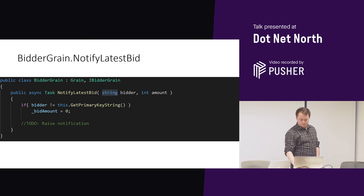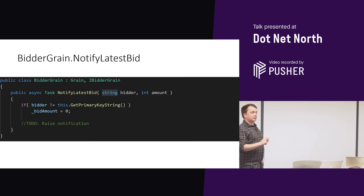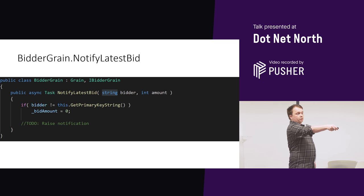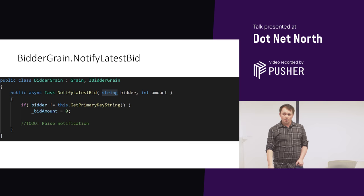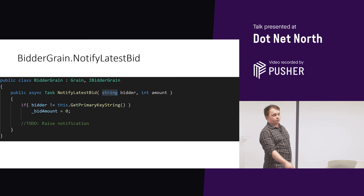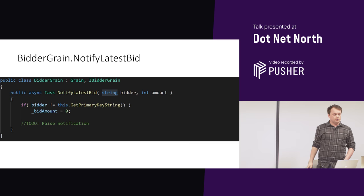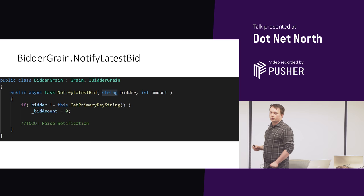Now we have NotifyLatestBid — our last method in the bidder grain for now. We're saying we want to be told who is the latest bidder and how much is that latest amount, because we may want to react somehow — we may have a grain that just automatically bids again. So if the bidder that has been passed in does not match my key string, set the bid amount to zero — we know we've lost. And we'll have a TODO: raise notification, and if we get time we'll look at some observers to show how you can notify out of the Orleans system into your normal code base.